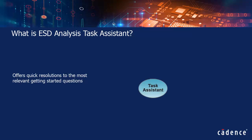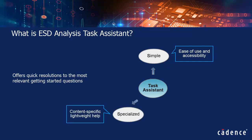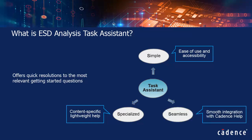Task Assistant is Simple because it provides ease of use and accessibility via CLI and GUI modes. It is Specialized because it provides content-specific lightweight help. And Task Assistant is Seamless because it smoothly integrates with Cadence Help.